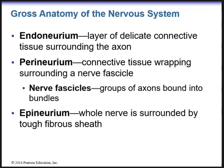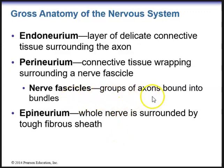These are the different layers of the nerves, much like the layers of the muscles and the muscle fascicles. The innermost layer is the endoneurium — endo meaning within. This is the layer of delicate connective tissue that surrounds the axon. Next is the perineurium, the connective tissue wrapping surrounding a nerve fascicle. Nerve fascicles are a group of axons bound into bundles.